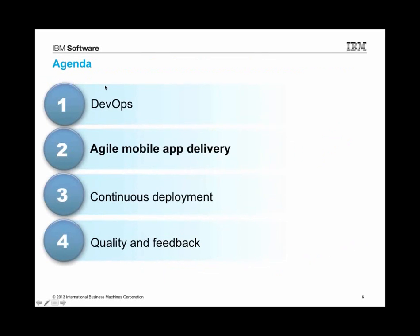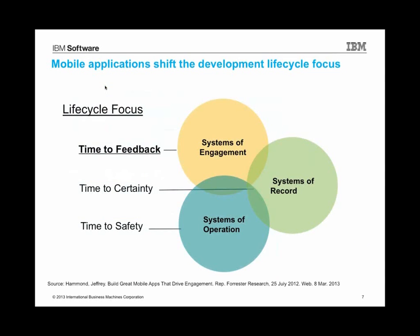That's a little bit of context on what DevOps is. Let's jump into the application of agility and lean into mobile app delivery itself. Jeffrey Hammond is an analyst at Forrester who talks about mobile development a lot. He presents this concept of systems, and there are three represented here that we all deal with. Let's start at the bottom and work our way to the top.